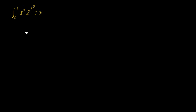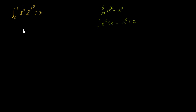So assuming you've had a go at it, there are a couple of interesting things here. The first thing my brain does is say: I'm used to taking derivatives and antiderivatives of e to the x, not some other base to the x. We know that the derivative with respect to x of e to the x is e to the x, or that the antiderivative of e to the x equals e to the x plus c. Since I'm dealing with something raised to a function of x, it seems like I might want to change the base here.